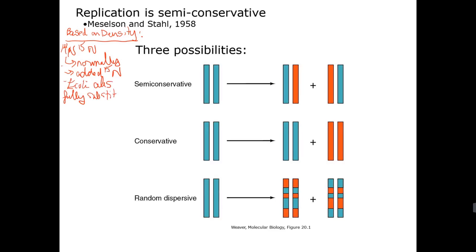So what they did, they grew the E. coli cells fully substituted with N15. So you grow them for a lot of generations in N15. And so by 14 generations you're able to produce the fully substituted dense DNA.